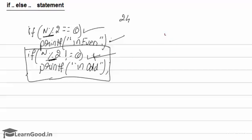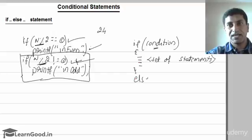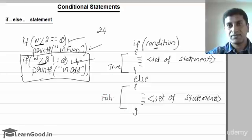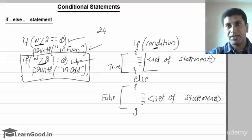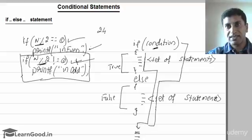In case of if-else there are two parts. You give a condition, and if the condition is true it executes the set of statements in the true part. Then there is an else part — in the else part you have another set of statements. If this condition is true, it executes the true part and then directly jumps outside the if statement. If the condition is false, it jumps to the else part, executes it, and then continues the code.